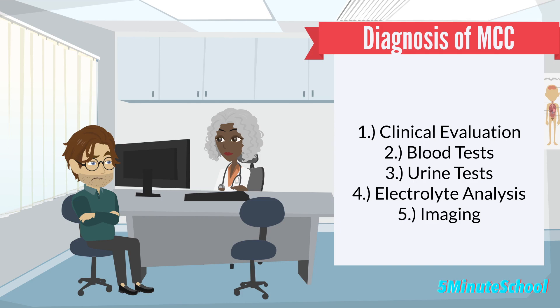A blood test can be taken — elevated levels of creatine kinase, myoglobin, and potassium in the blood are key indicators. A urine test can also be done, as myoglobinuria is often present and can cause urine to appear dark or reddish-brown. Electrolytes can be analyzed to assess imbalances, particularly potassium levels. Imaging such as ultrasound or MRI can evaluate muscle damage and any underlying causes.